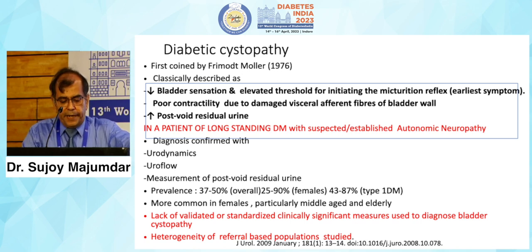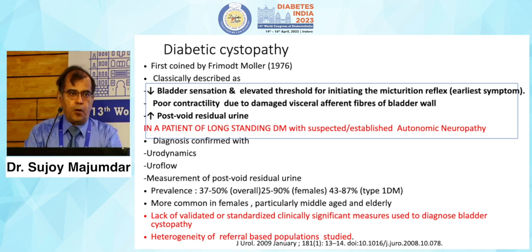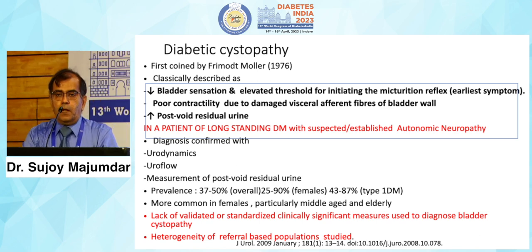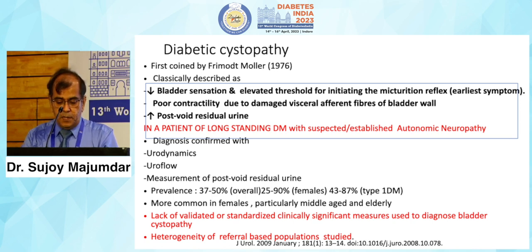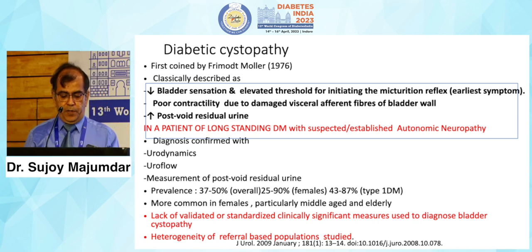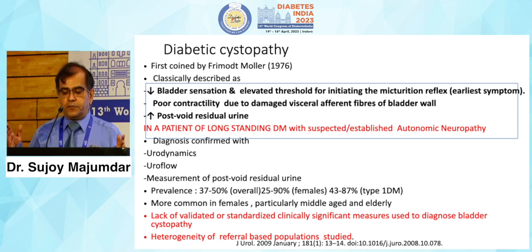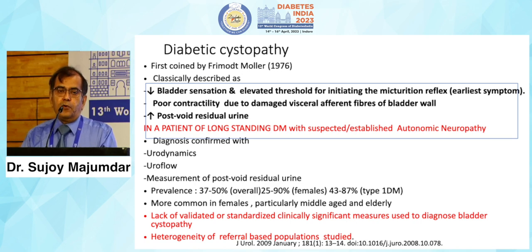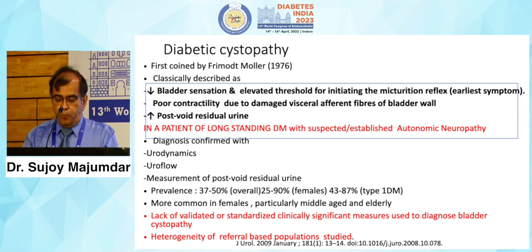The gold standard for diagnosis is urodynamics and uroflow, and by measurement of post-void residual urine. The overall prevalence in all diabetes patients is between 37 to 50 percent, mostly in females between 25 to 90 percent, and particularly in type 1 diabetes patients where prevalence is between 43 to 87 percent. These wide ranges exist because most studies are not well-validated — they are anecdotal studies using different criteria for diagnosing cystopathy, reflecting a heterogeneous population base.